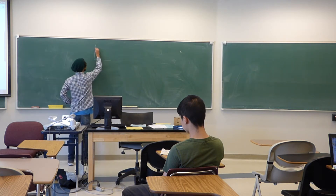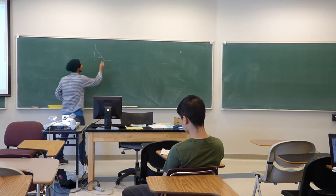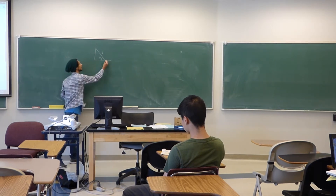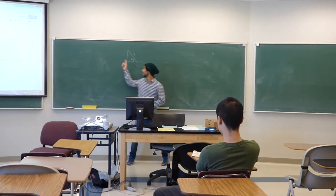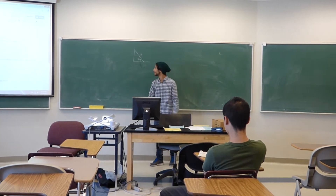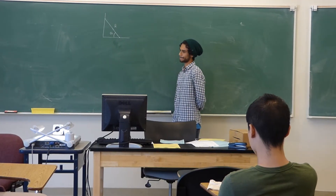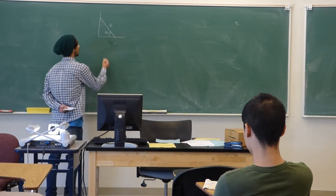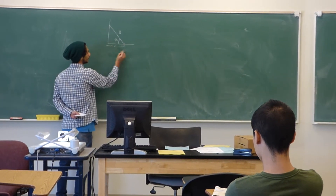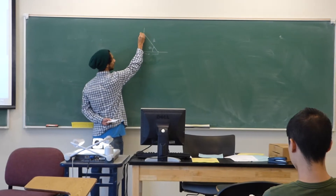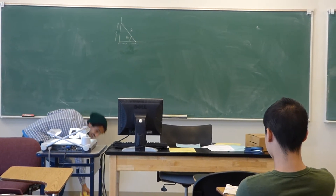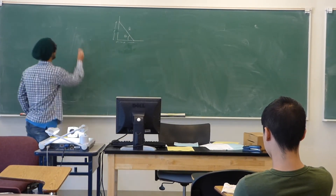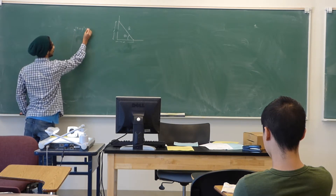The problem is there's a ladder leaning against the wall. The ladder is length L, the base is at the bottom and the tip of the ladder is at the top. We do this using a Pythagorean model where we represent the base as x and the tip of the ladder as y, and we can write down the equation x squared plus y squared equals L squared.